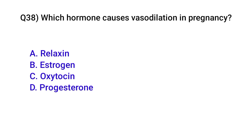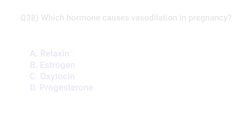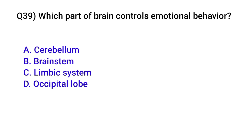Question number thirty-eight: Which hormone causes vasodilation in pregnancy? Correct option is A: Relaxin. Question number thirty-nine: Which part of the brain controls emotional behavior? Correct option is C: Limbic system.